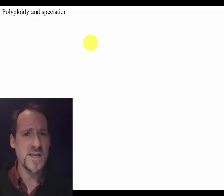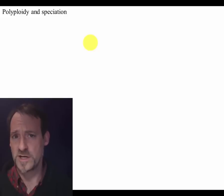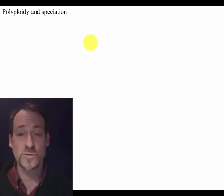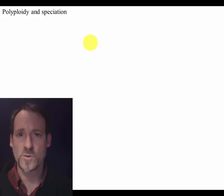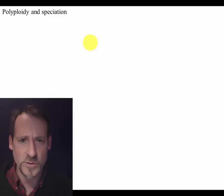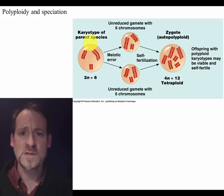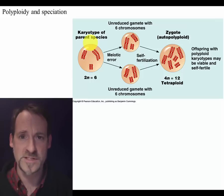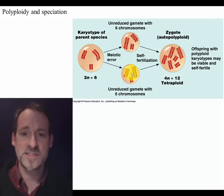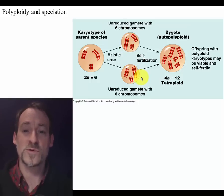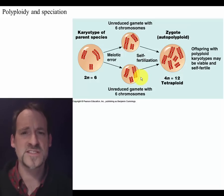There's one particularly strange way in which new reproductively isolated species can form, and it's called polyploidy. Polyploidy is what occurs when, for whatever reason, you get gametes coming together where the reduction division during meiosis has not occurred.